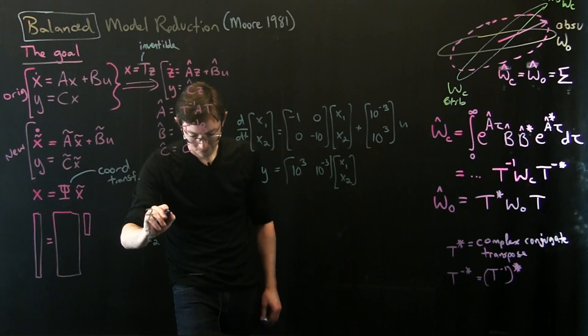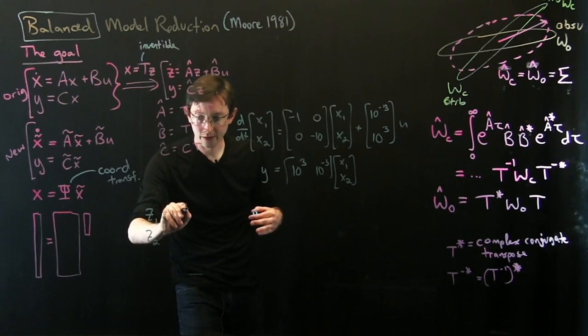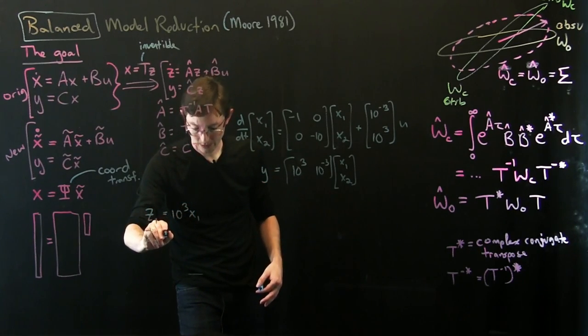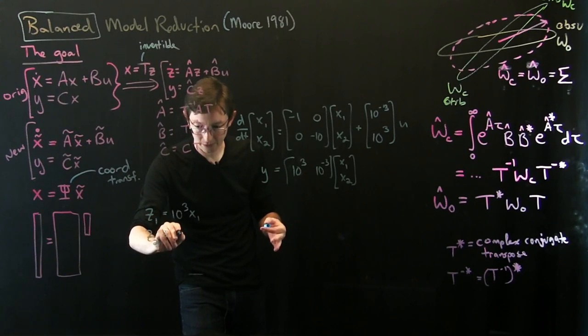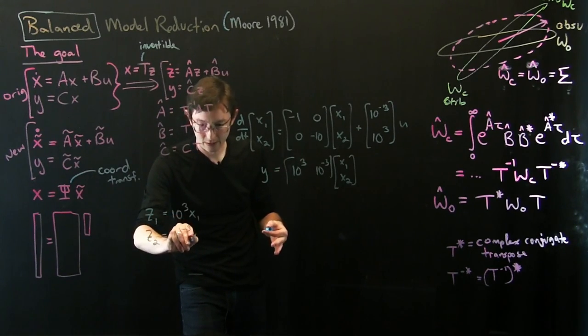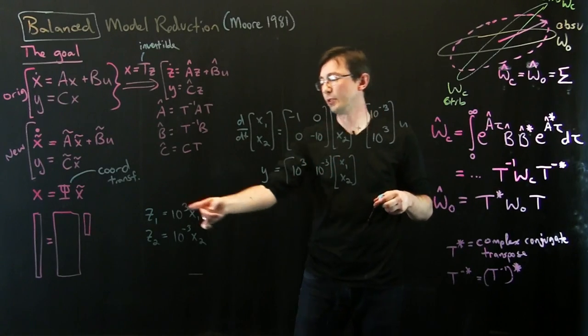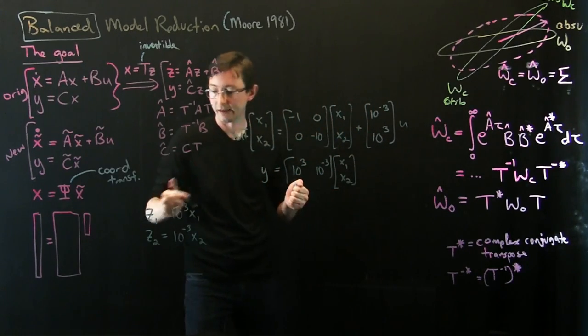Z1 is going to equal 10 to the 3 times x1, and z2 is going to equal 10 to the minus 3 times x2. This seems just ridiculously simple. And you could write this as a matrix if you wanted.